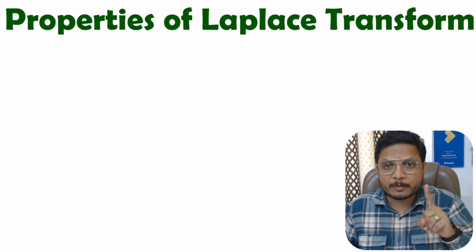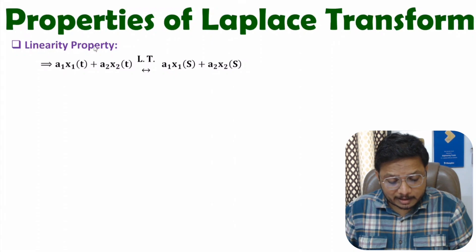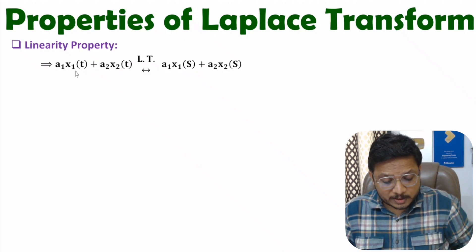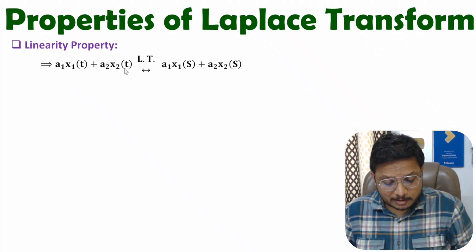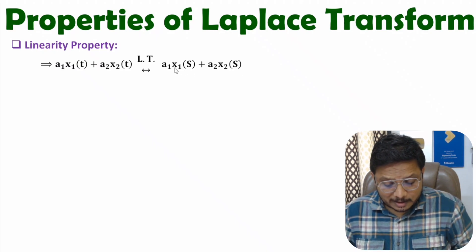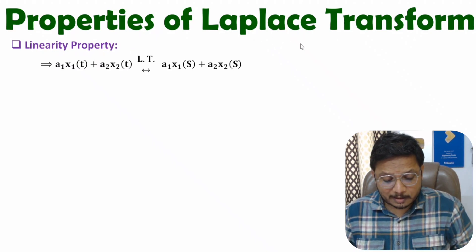Let me explain the first property of Laplace transform, which is based on the linearity property. Laplace transform follows linearity, meaning if you have two signals x1(t) and x2(t) and you take the Laplace transform of a1·x1(t) plus a2·x2(t), then the result will be a1·X1(s) plus a2·X2(s), where X1(s) is the Laplace transform of x1(t) and X2(s) is the Laplace transform of x2(t).